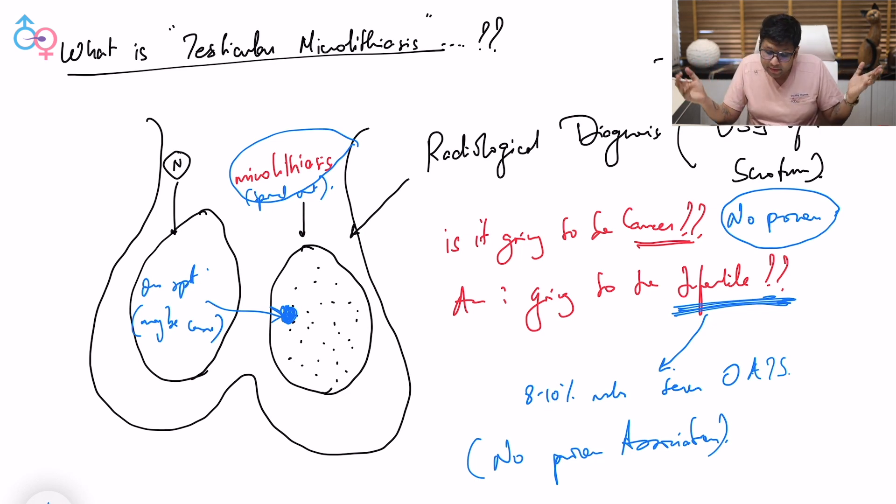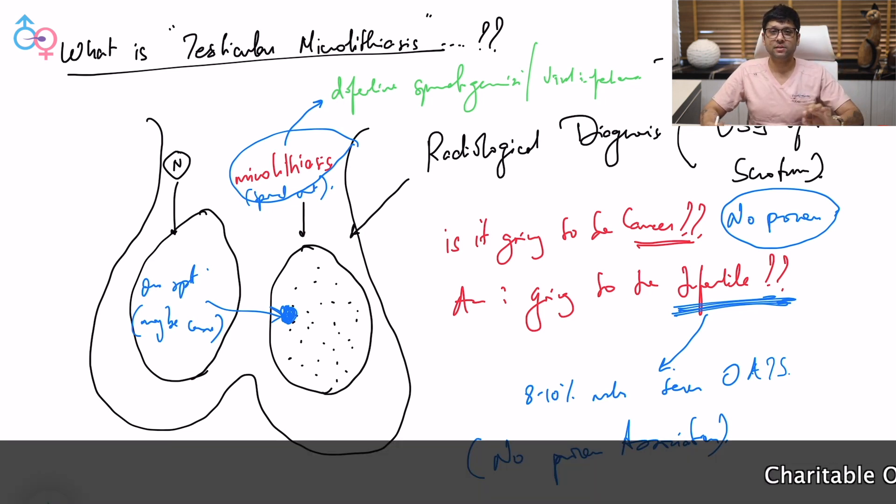It is suspected that microlithiasis occurs predominantly due to defective spermatogenesis - that means defective sperm production - or due to previous viral infections. But we do not know. These are all just postulated theories. With this much in your mind, let's go and have a look at the ultrasound on how this entire thing looks.